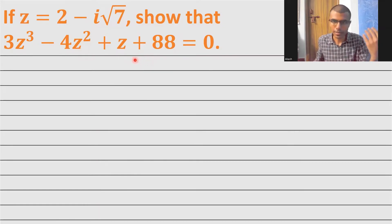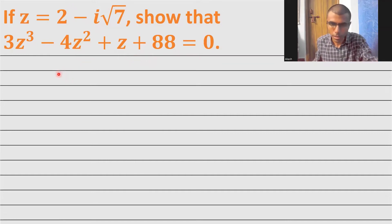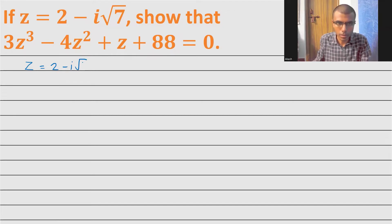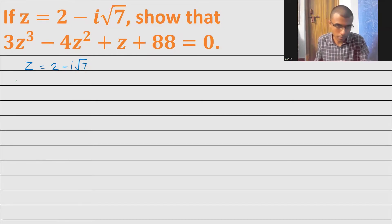That is how my flow is going to be — let's get started. So z is 2 - i√7. This has √7, so be a bit careful in calculations.